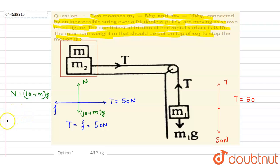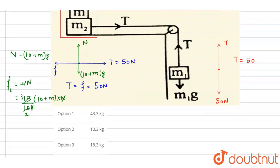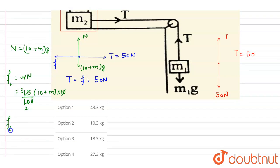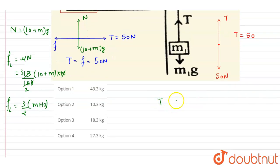Now I will write down the friction force. Mu is 0.15, which simplifies to 3/2 when working through the calculation. The limiting friction is (3/2)(10 + m) multiplied by g. So the limiting friction is expressed in terms of m. We want this block not to move, so the tension force applied should be less than or equal to the limiting friction.